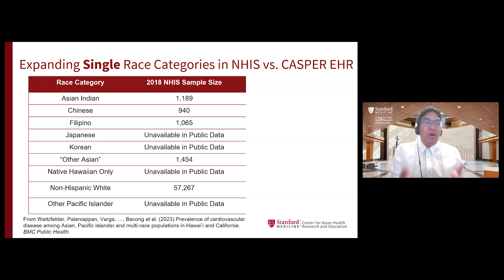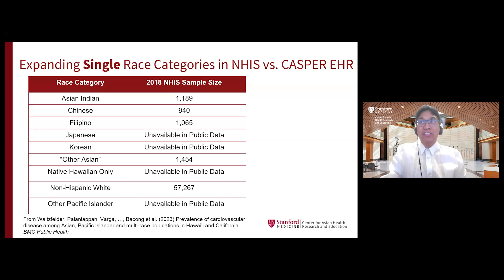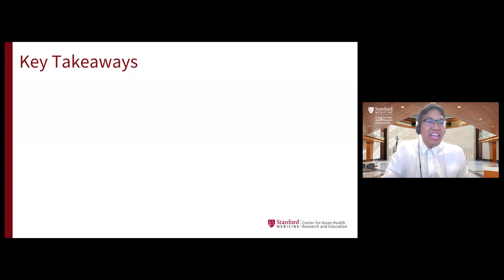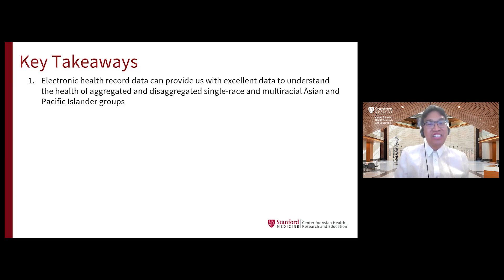So the question is, if I want to study these communities, how can I get better access to data? One way is by collaborating with healthcare systems and using electronic health records, which have thousands of individuals of different and multicultural racial backgrounds. Electronic health records, in light of the lack of data from national health surveys, can provide us with good data to understand not only aggregated groups, but also disaggregated single-race and multiracial Asian and Pacific Islander groups.